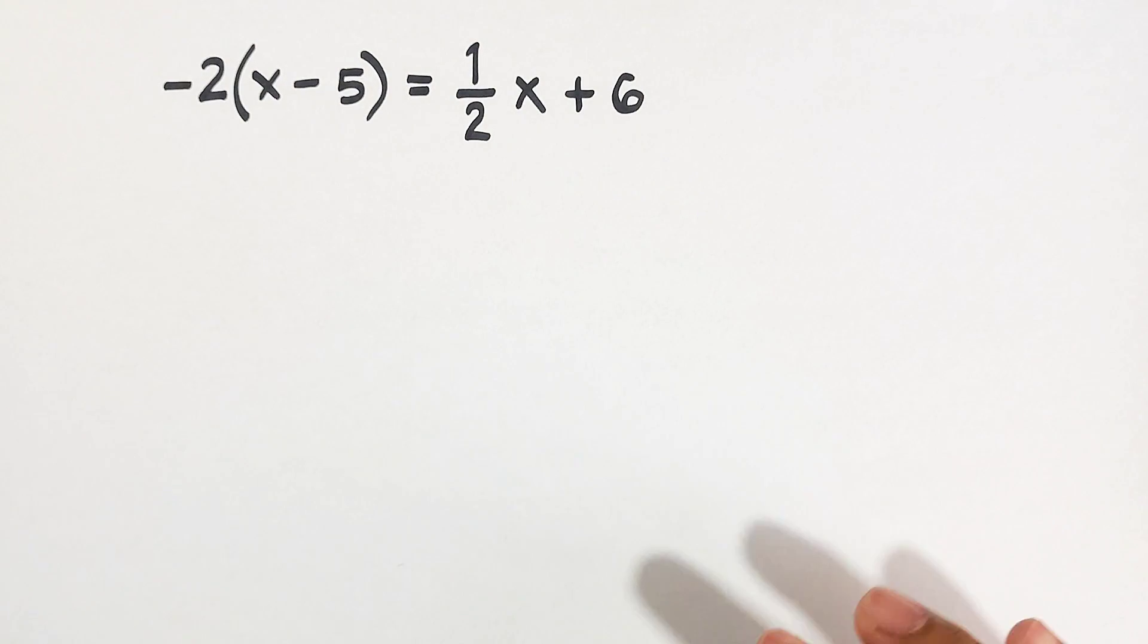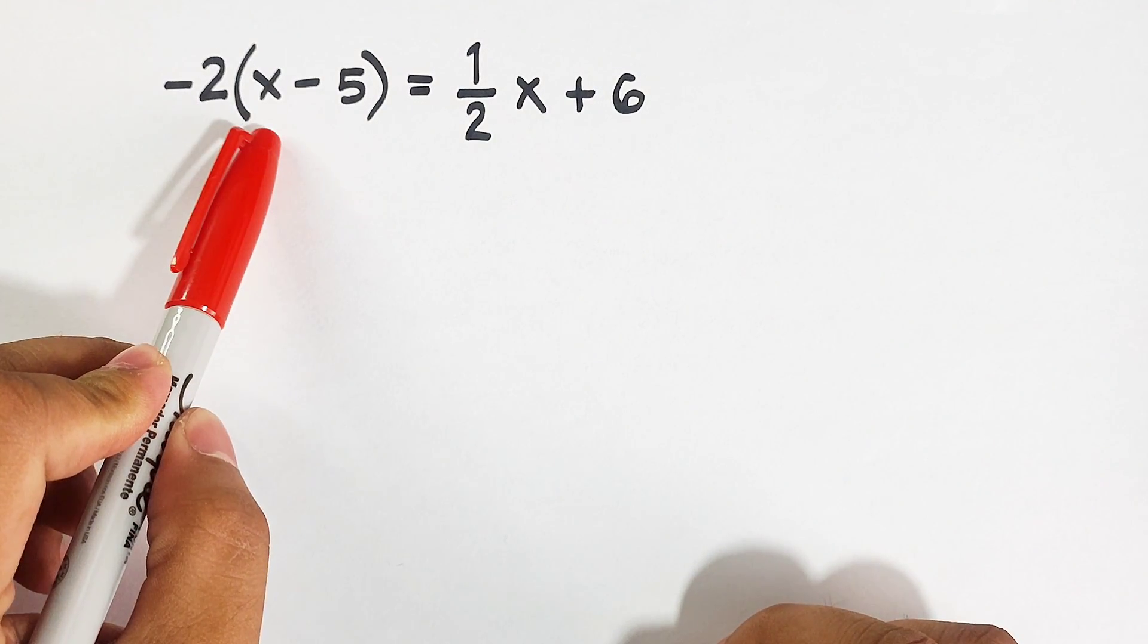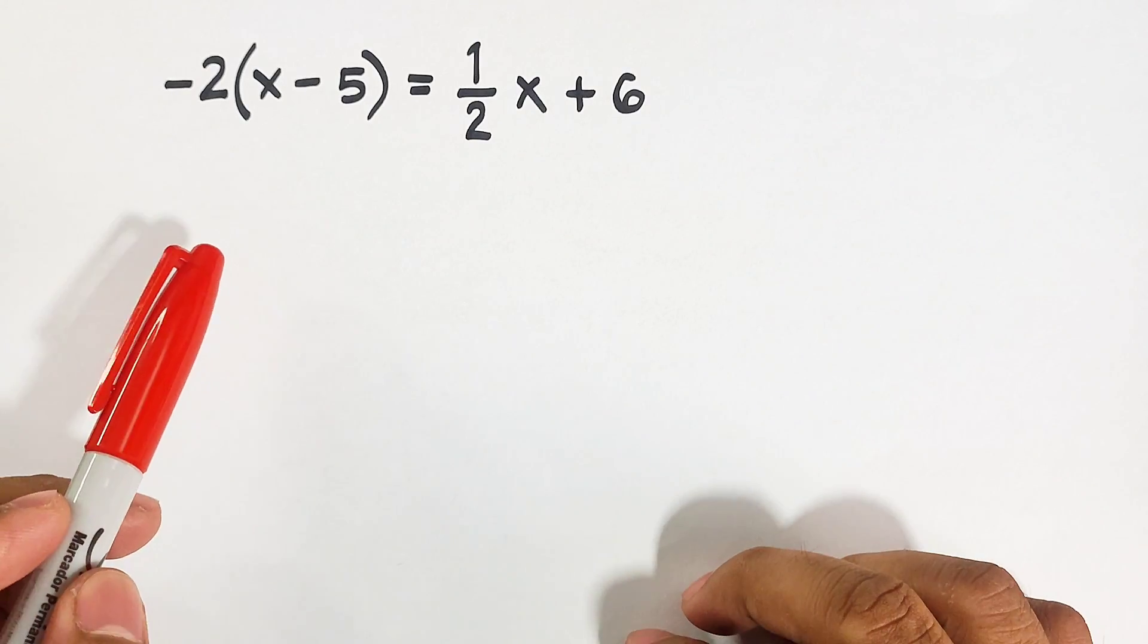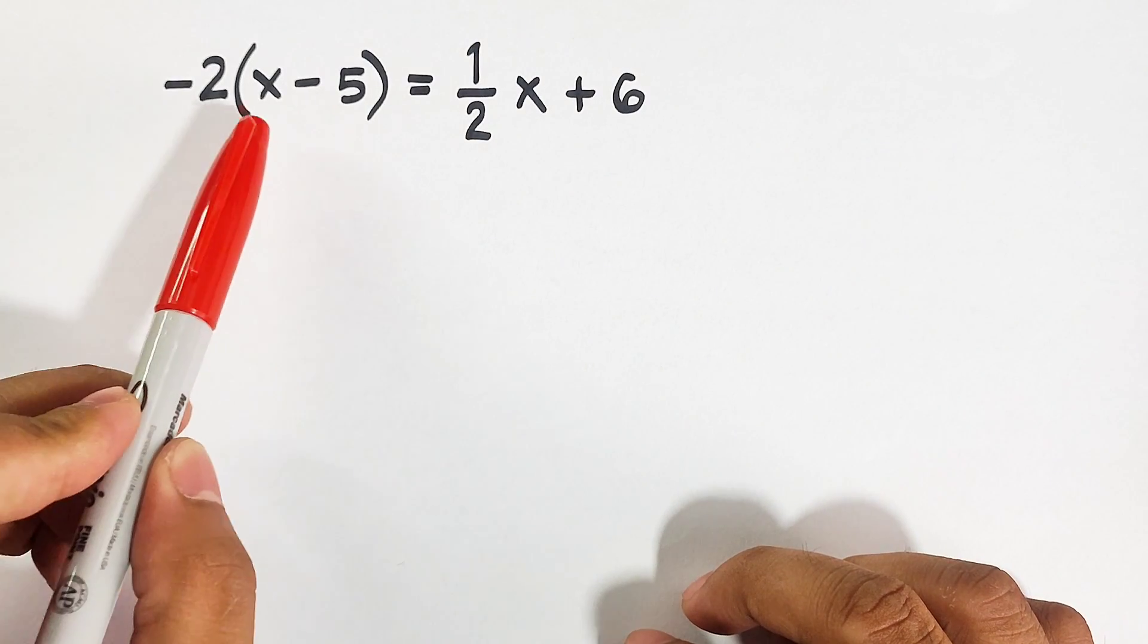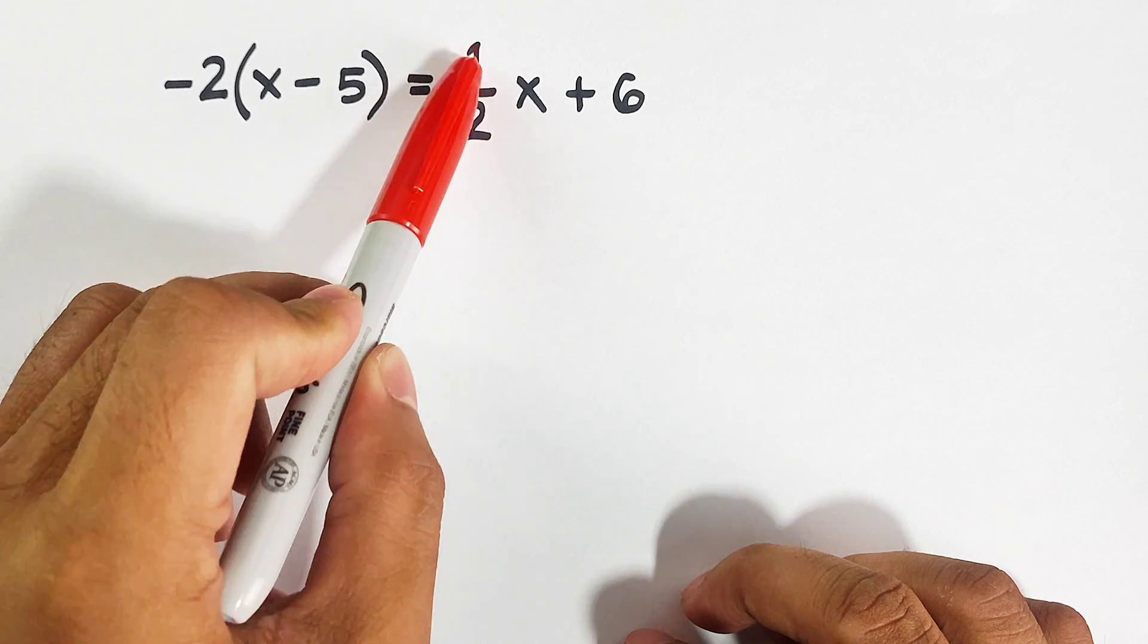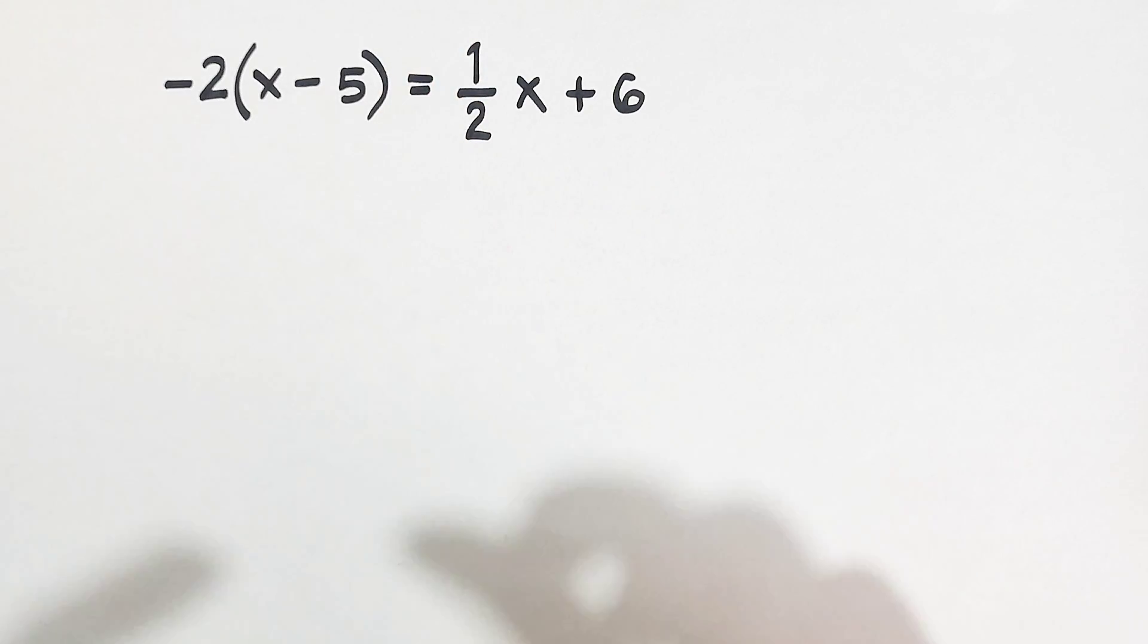So what we have here is a single equation in which there's a fraction in it, and we are trying to find the value of x in this kind of equation. The problem is: negative 2 times x minus 5 equals one-half x plus 6.